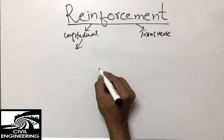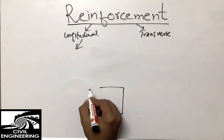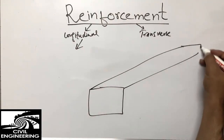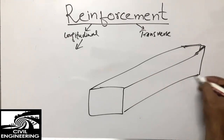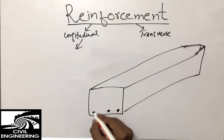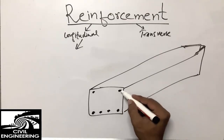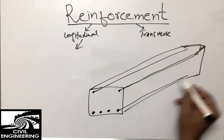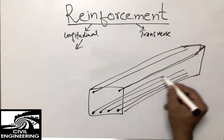First, let's discuss longitudinal reinforcement. Consider an example of a beam — I will draw it in 3D. This is a beam, and throughout the length of the beam, we can see the reinforcement placed inside the beam at the bottom or at the top, going throughout the length. These are called longitudinal reinforcement.